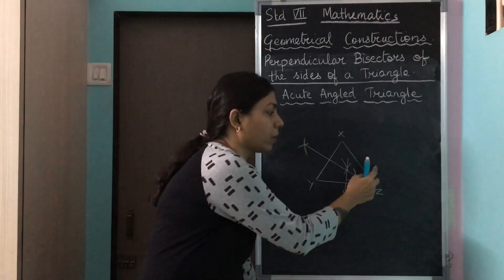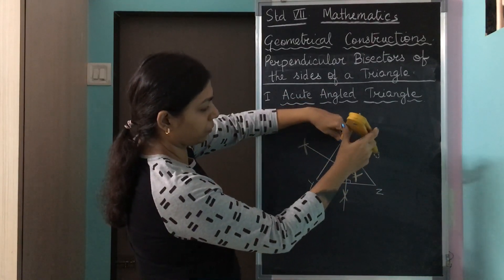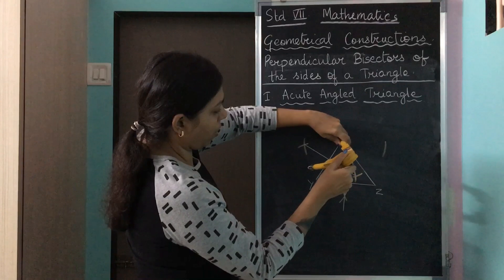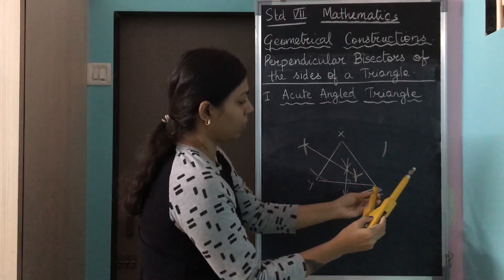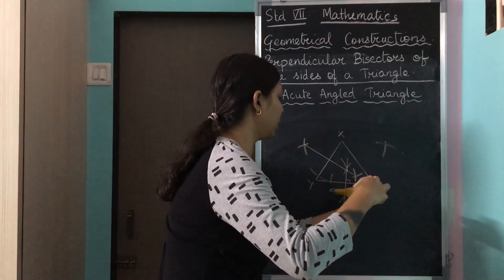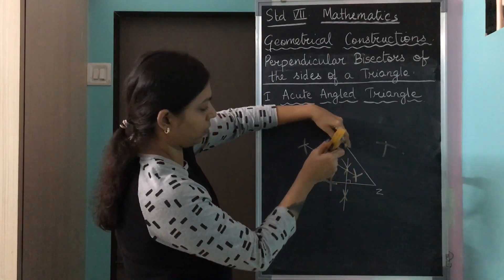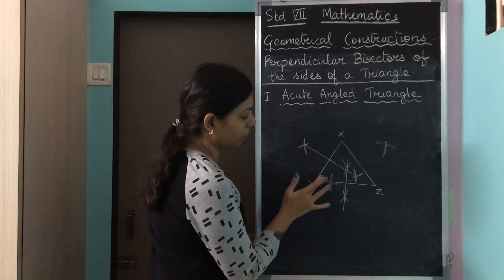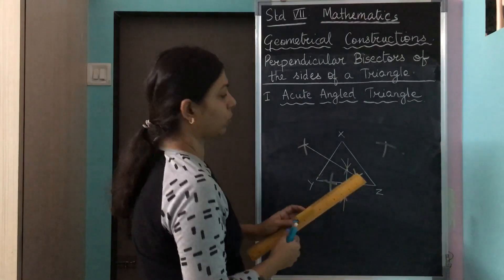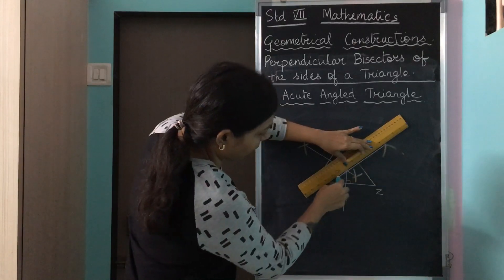The same thing has to be done for the third side. Keeping my pointer on point X, I draw one arc here and one arc here. Then on point Z, one arc here and one arc here. My arcs had not met at first, so I made sure they were meeting. I have got one X mark here and one X mark here, and I connect both of them together by adjusting my ruler.